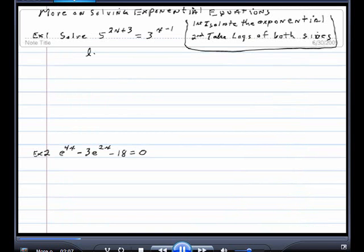So step one, I'm going to take log of both sides. Log, that's log base ten of 5 to the 2x plus 3 is equal to log of 3 to the x minus 1.